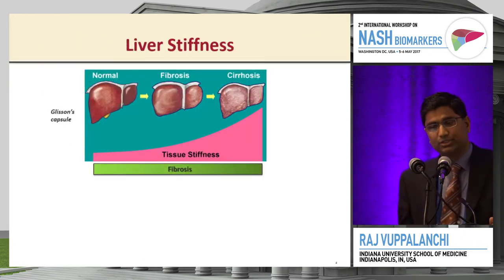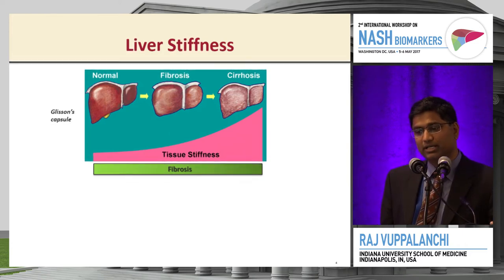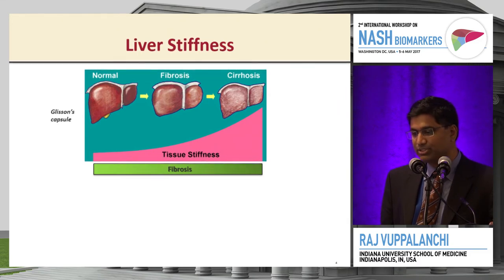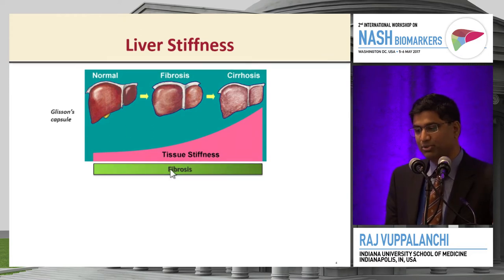It's very important to recognize that the liver is inside a capsule, and stiffness is higher in the superficial regions; as you go deeper into the liver, stiffness decreases. With fibrosis, stiffness increases. Tissue stiffness increases with increasing fibrosis, and for all practical purposes, we think that liver stiffness is representative of fibrosis.